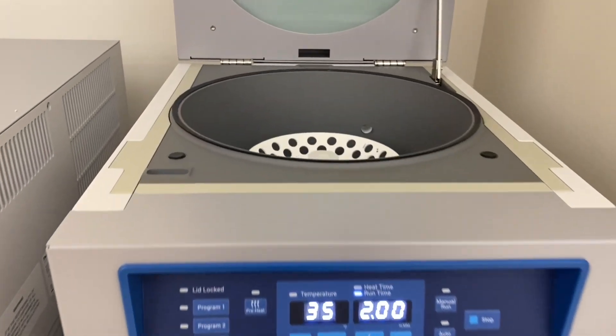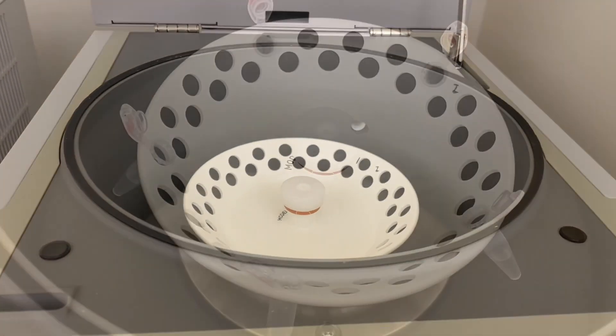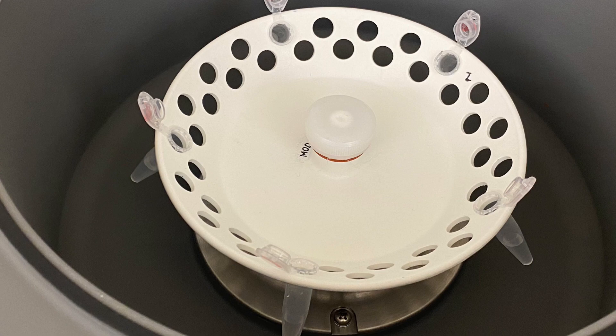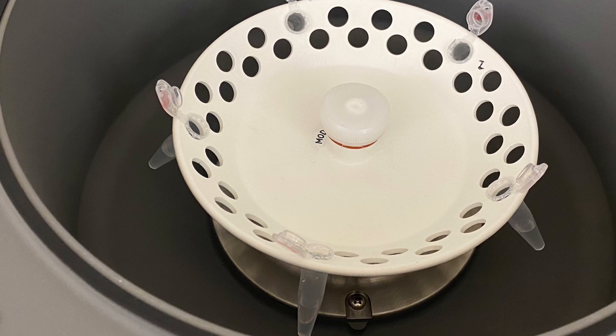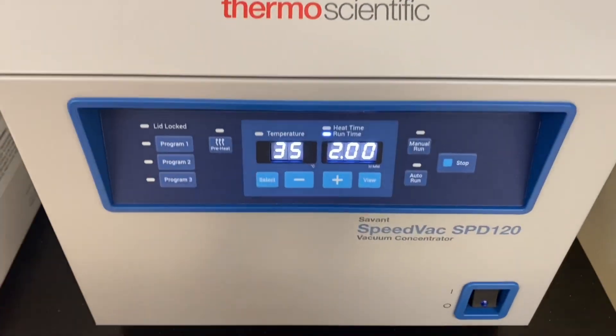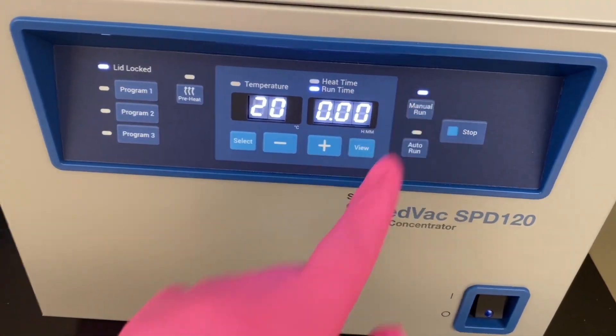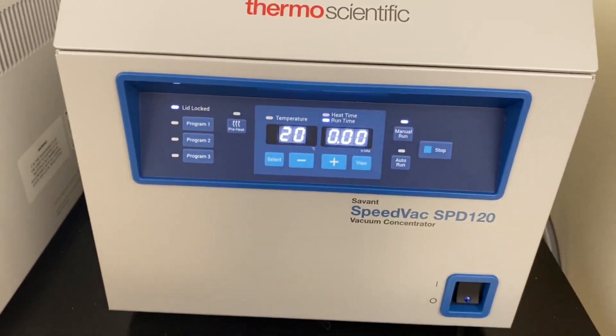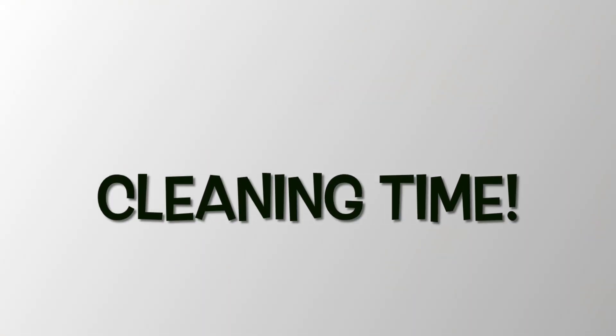So guys, all our hard work is done now. My last step is to dry my samples down. So I'm going to use the Speedvac. I'm going to dry my samples down until I see a nice white pellet. And after that, I will clean the pellet. The reason why we have to clean our peptide pellet is because mass spectrometers don't like detergents and salts.